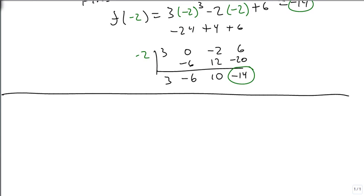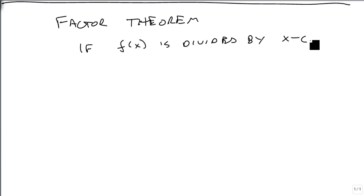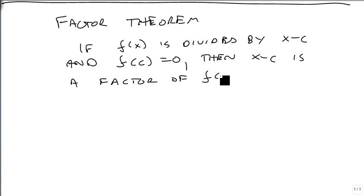Now the next theorem that we're going to look at is the factor theorem. And the factor theorem states, if f(x) is divided by x minus c, and f(c) equals 0, in other words there's no remainder,